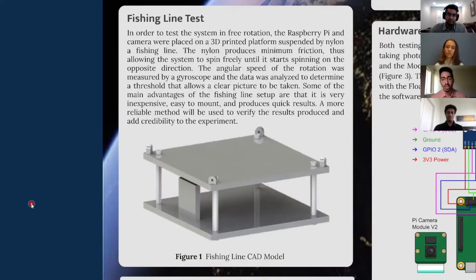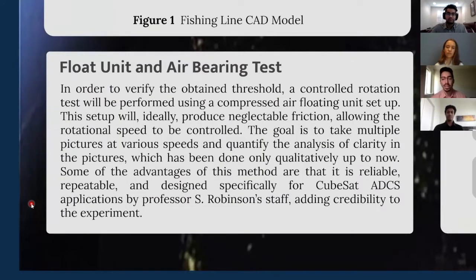For the control rotation test, a compressed air floating unit setup will be used on a flat table. The idea here is to create a cushion of air under the floating unit, which will produce minimum friction with the table. This will allow the speed to be controlled in the sense that it can be maintained constant throughout the test, such that multiple pictures can be taken at the same speed to verify the results obtained by the free rotation test. Despite being slower and less practical to mount, the system is much more reliable than the fishing line setup, and the process will ideally be completely repeatable.